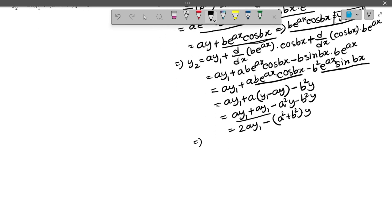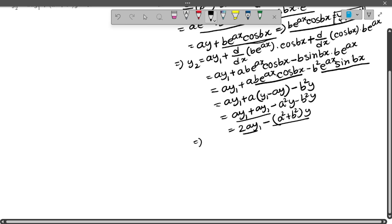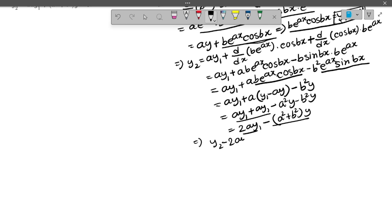So if we move these terms to the left hand side, it will be y₂ minus 2ay₁ plus (a² + b²)y equals 0. So it is proved.